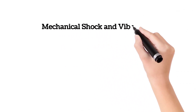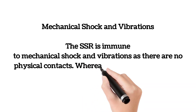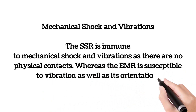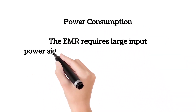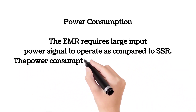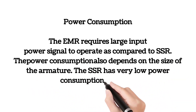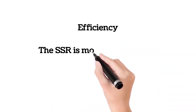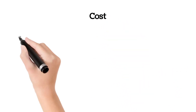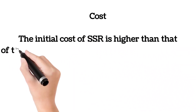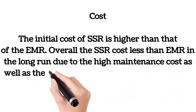Mechanical shock and vibrations: The SSR is immune to mechanical shock and vibrations as there are no physical contacts, whereas the EMR is susceptible to vibration as well as its orientation. Power consumption: The EMR requires a large input power signal to operate compared to SSR, and power consumption also depends on the size of the armature. The SSR has very low power consumption. Efficiency: The SSR is more efficient than EMR as it has low power consumption and overall cost. Cost: The initial cost of SSR is higher than that of the EMR. Overall, SSR costs less than EMR in the long run due to the high maintenance cost, high power consumption, and low lifespan of EMR.